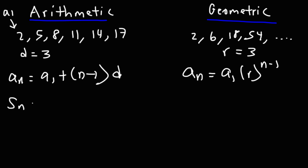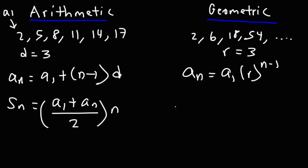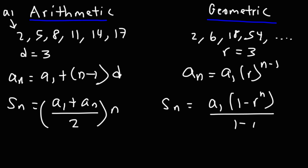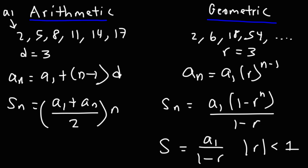To find the sum of a set of arithmetic terms, it's (first term plus last term) divided by 2, times the number of terms. For a geometric series, the sum is the first term times (1 minus r to the n) over (1 minus r). For an infinite geometric sequence where the absolute value of r is less than 1, you can calculate the sum by removing the r-to-the-n term — the numbers must be decreasing.